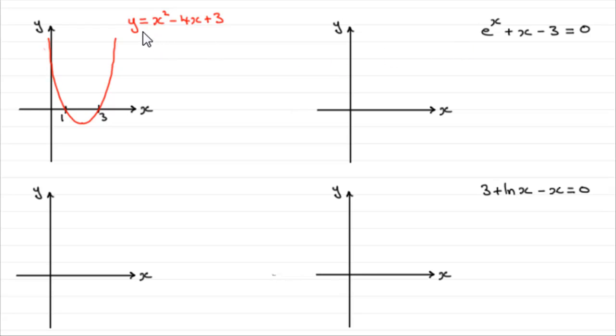To do this, I want to take you back to a basic curve, y equals x squared minus 4x plus 3. It's a parabola, and you can see it crosses the x-axis at the points 1 and 3.